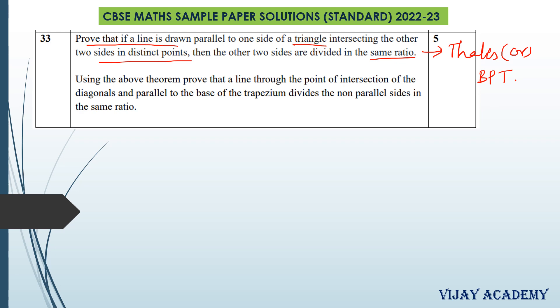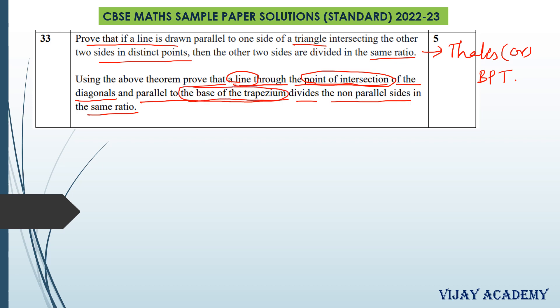Now let us prove the other part of the question. Using the above theorem, prove that a line through the point of intersection of the diagonals and parallel to the base of the trapezium divides the non-parallel sides in the same ratio. We are supposed to draw a trapezium first, then join the diagonals, and then draw a line passing through the point of intersection and parallel to the base of the trapezium. Let us draw the diagram.